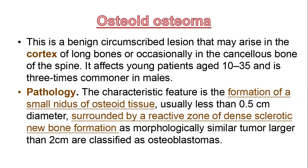So as we go along, we'll encounter another form of tumour known as osteoblastoma. If the tumour is 0.5 centimetres with the same characteristics, it remains classified as osteoid osteoma.